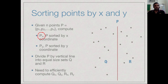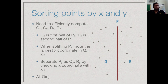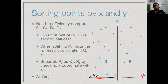We now have two sets Q and R. To continue the recursion, we need Q sorted in both x and y, and similarly for R. So we need to efficiently compute Qx, Qy, Rx, and Ry. Qx and Rx are easy: since the full list is Px, everything to the left of the midpoint is Qx and everything to the right is Rx — one scan of Px suffices. Now the question is: what about the y-sorted lists?